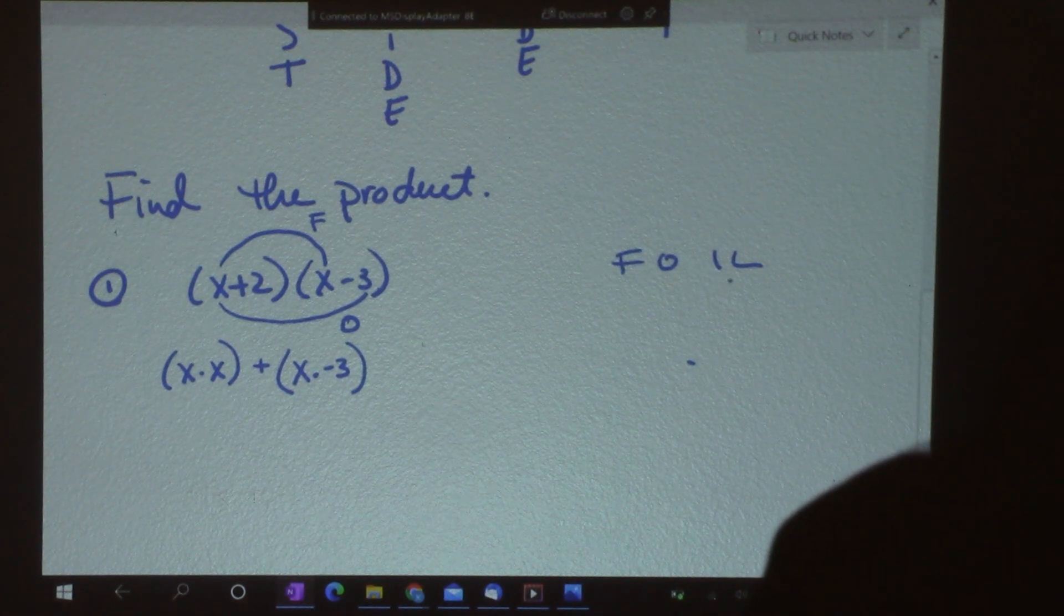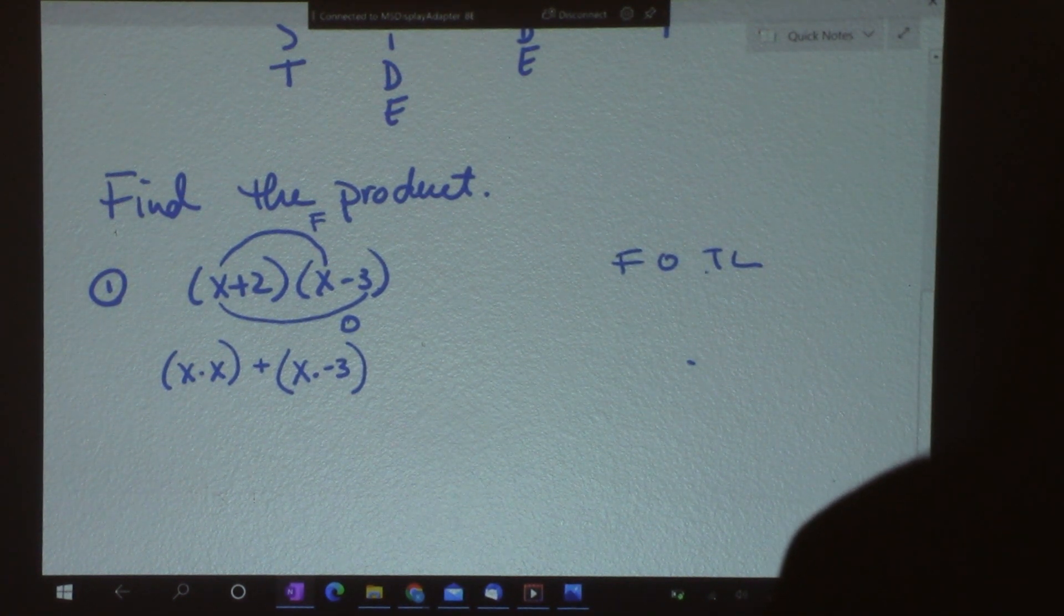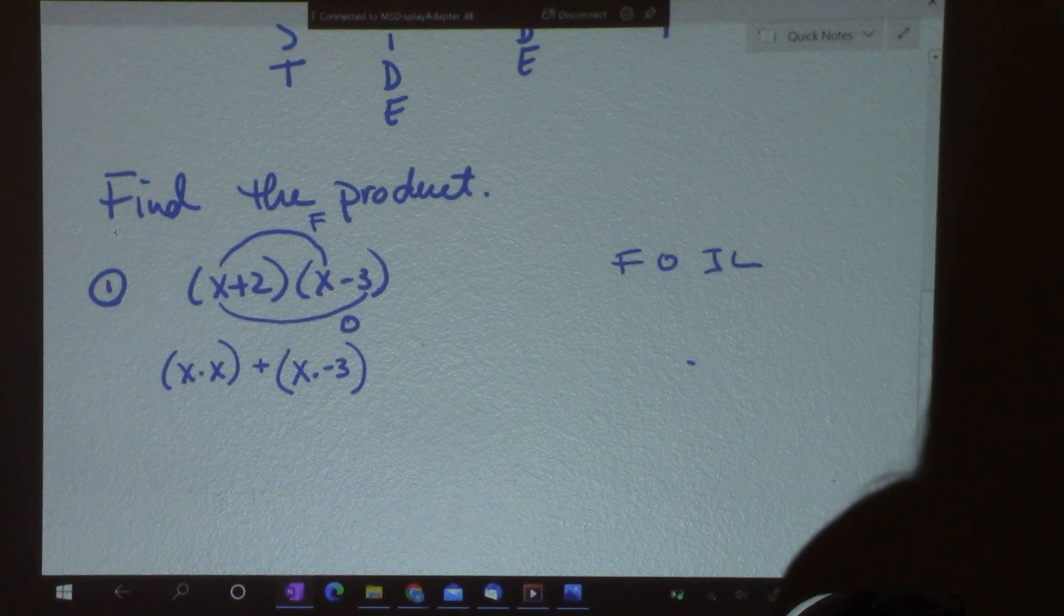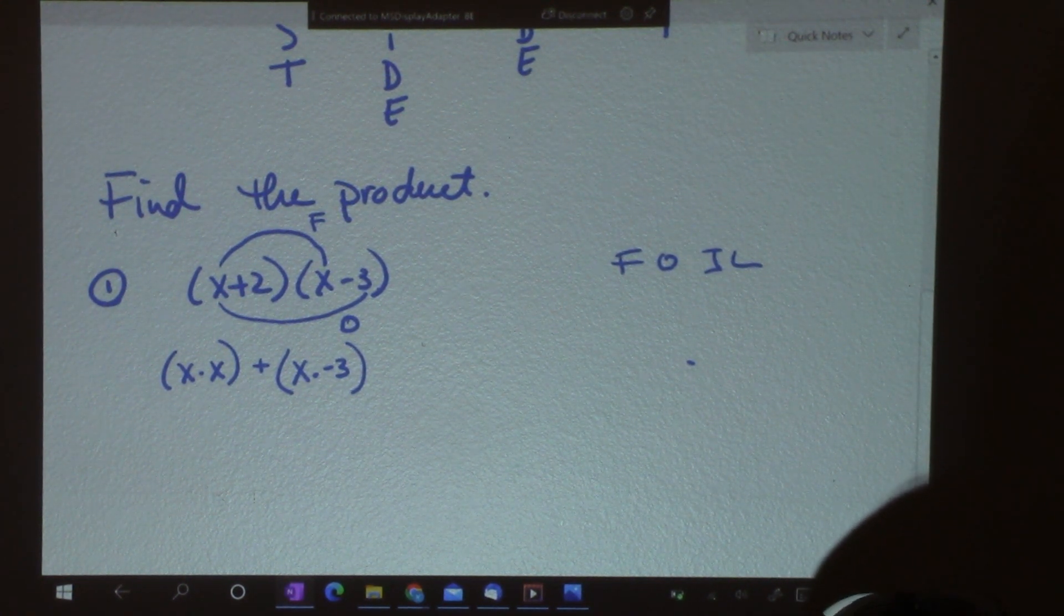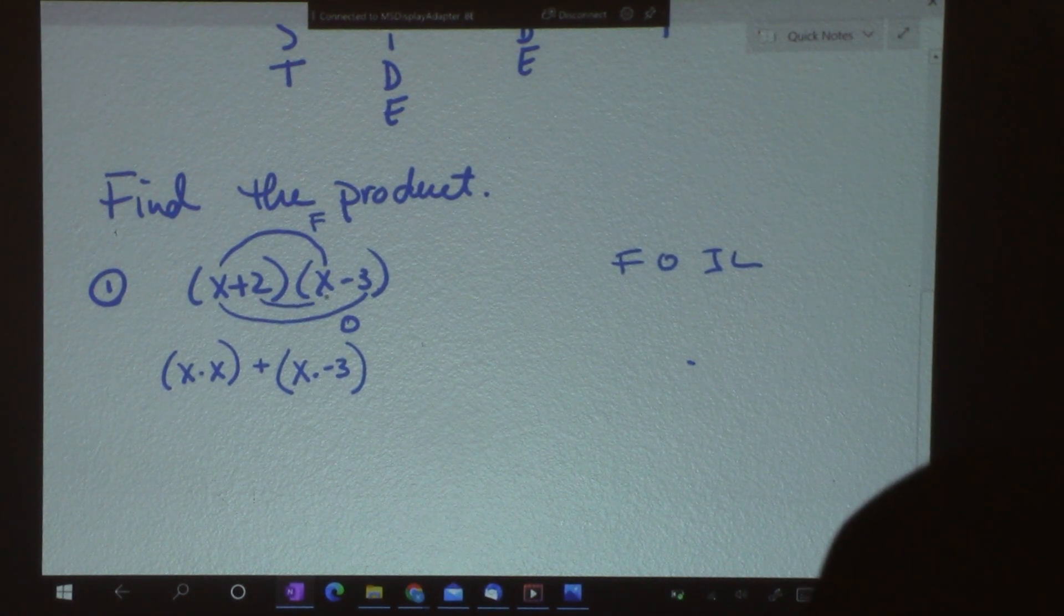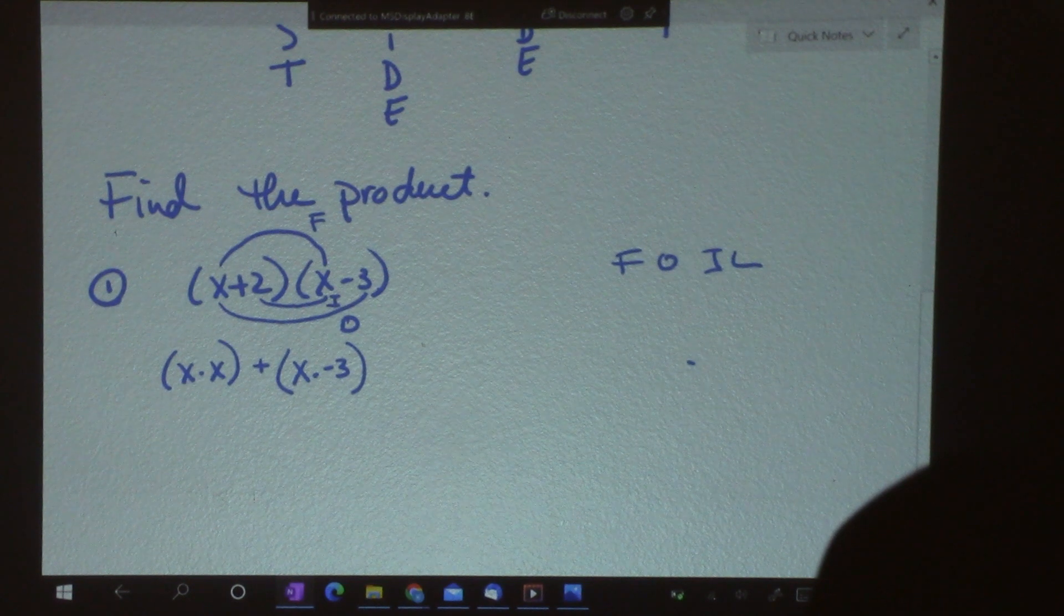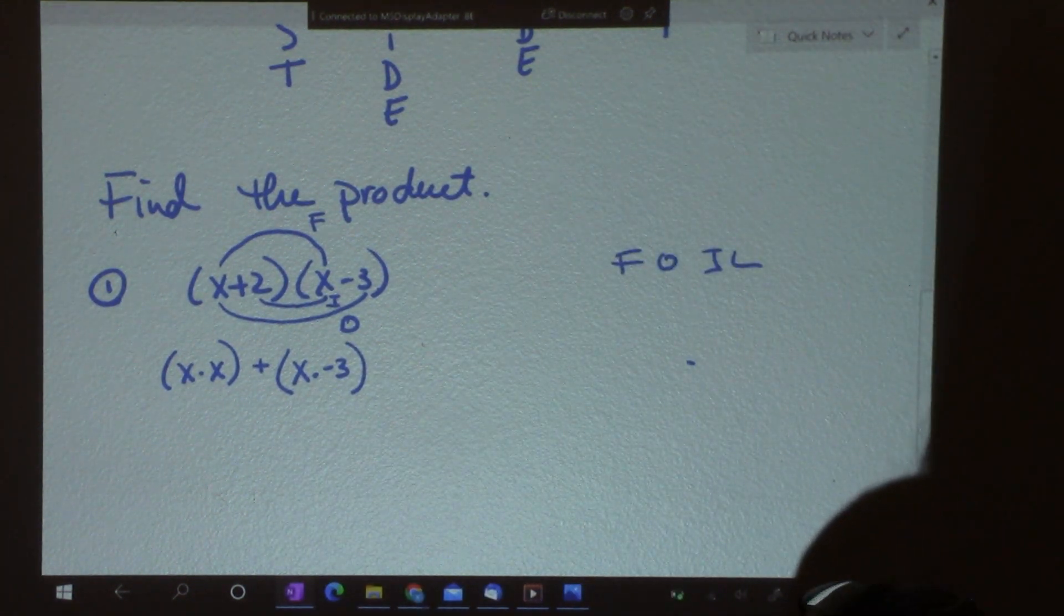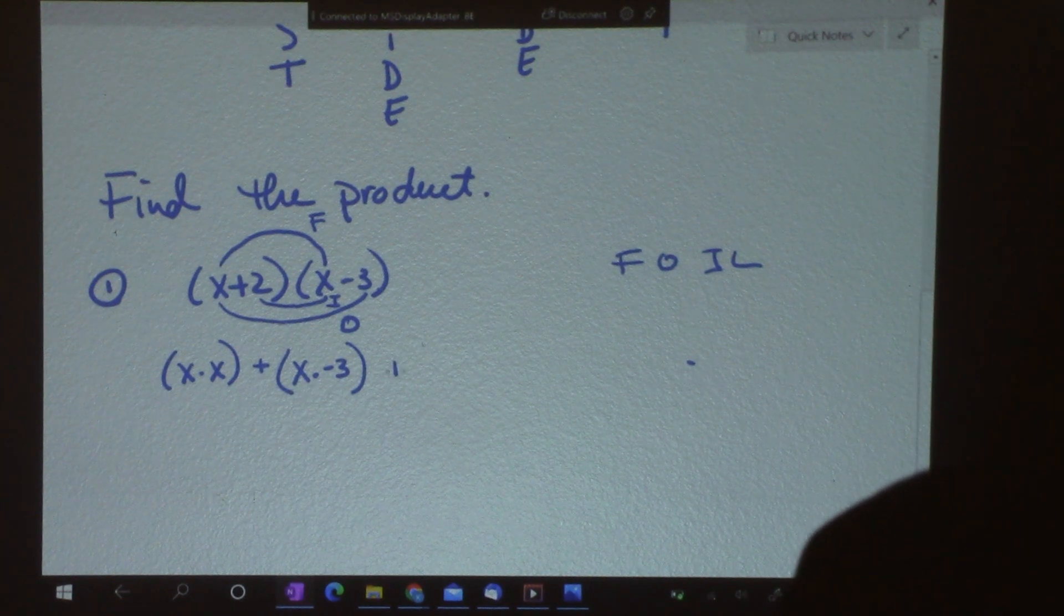Now, my next letter is I, which is for inside. And this is as opposed to the outside. You can see x and 3 in their position are on the outside. So, that would make sense, then, that the 2 and the x are the two terms that are on the inside of the four that I have. So, then, I would multiply 2 times x.